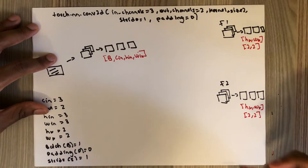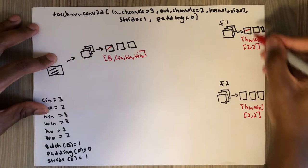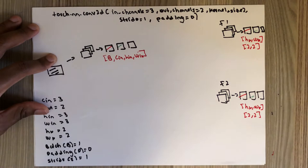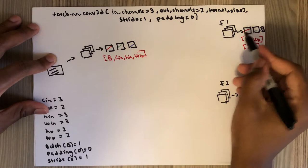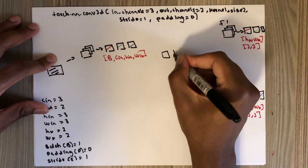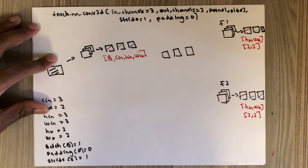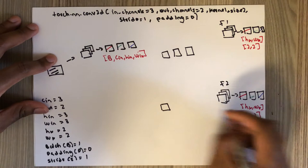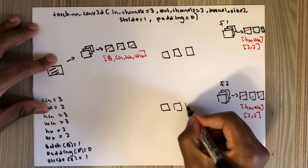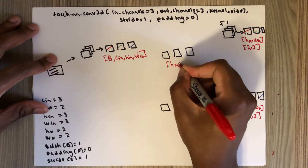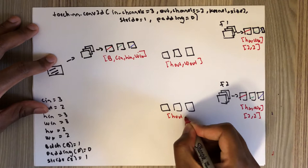What happens is that corresponding channels are convolved together. The red channel of the input is convolved with the red channel of the filter, the green channel with the green channel, and the blue channel with the blue channel — for both filter one and filter two. Each resulting convolved output has dimension H_out × W_out.